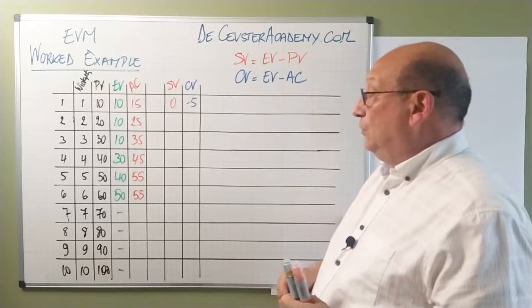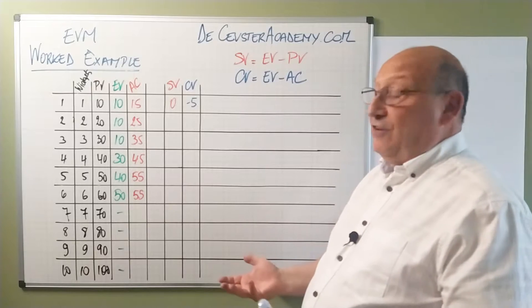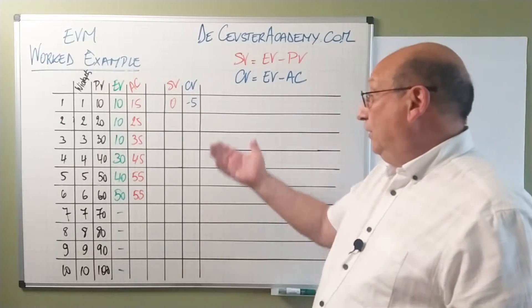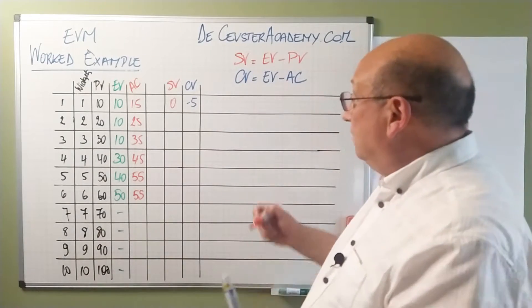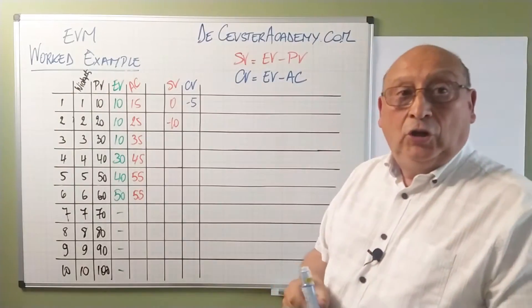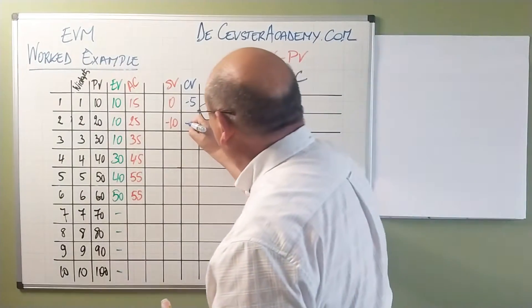Schedule variance here we had to create a value for 20k. We only made 10k so we have minus 10 and the cost variance here is minus 15.